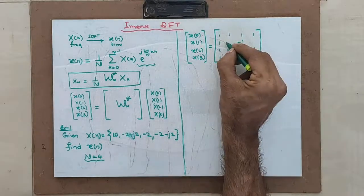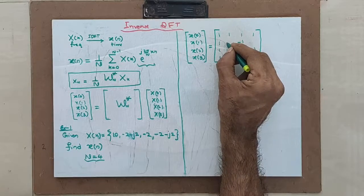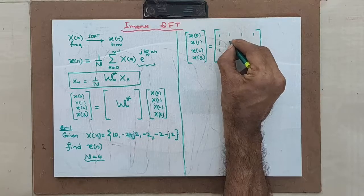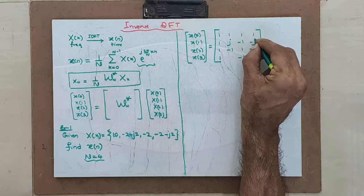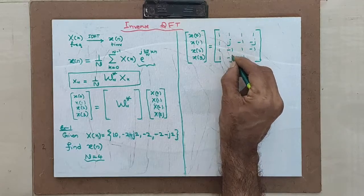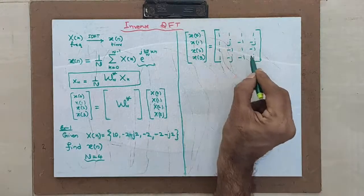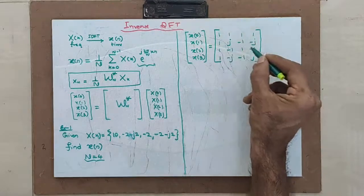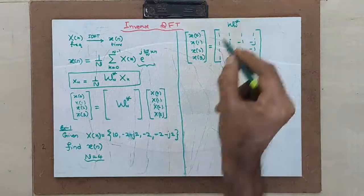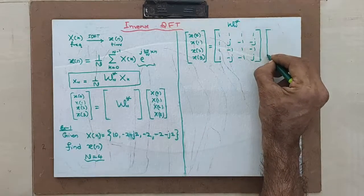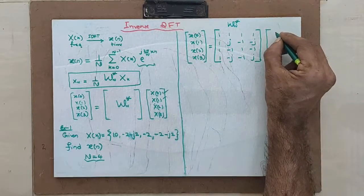Previously, in finding the DFT, you started with minus j at that position. Now you conjugate it, so that becomes plus j here, and the conjugate of that is minus j. When you entered minus j before, now it becomes plus j. This is the W_N conjugate matrix — not the W_N matrix. Now, multiply that by the input column vector x0, x1, x2, x3, which is given as 10, minus 2 plus j2, minus 2, minus 2 minus j2.